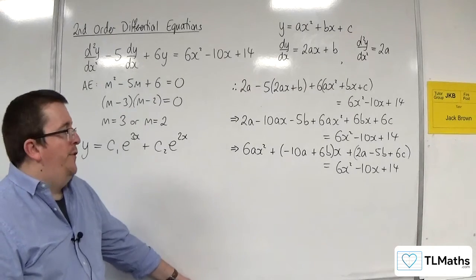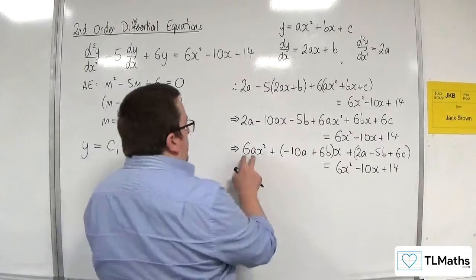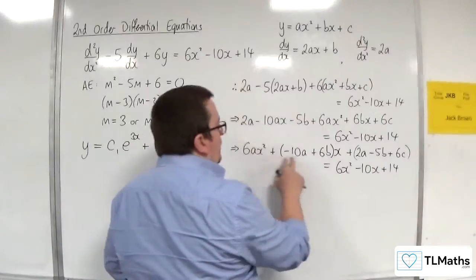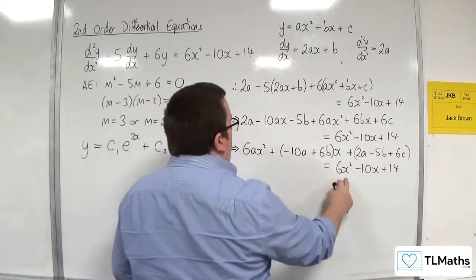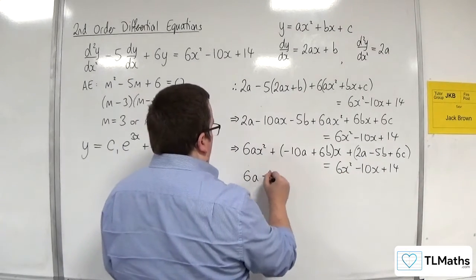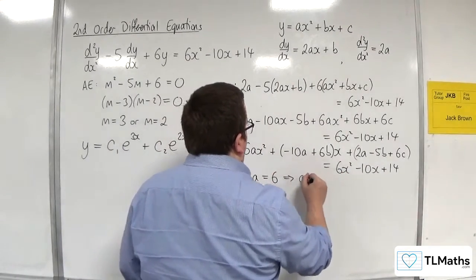Right, so comparing coefficients then. We've got 6a, the coefficient of x squared here is going to be the same as the coefficient of x squared there. So 6a equals 6. That implies that a is equal to 1.